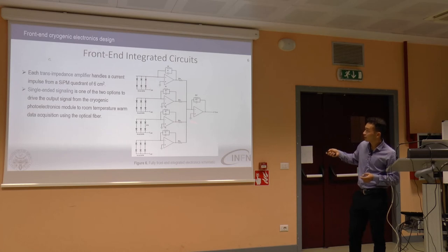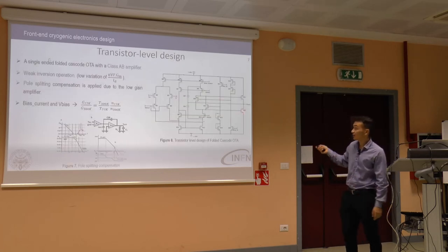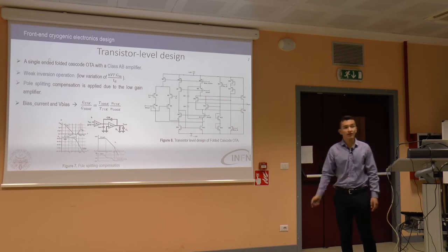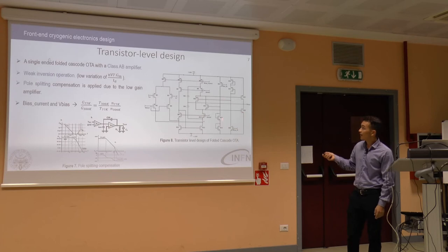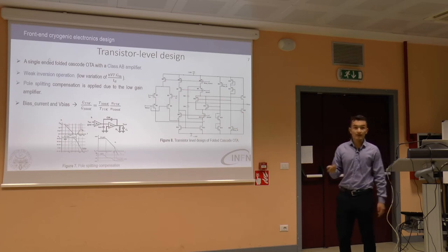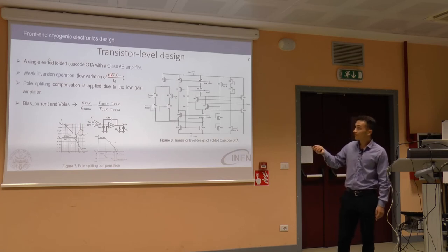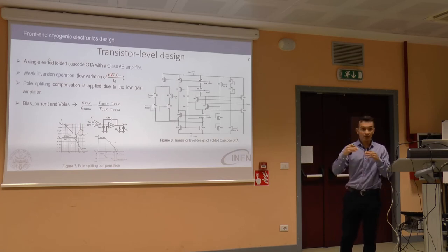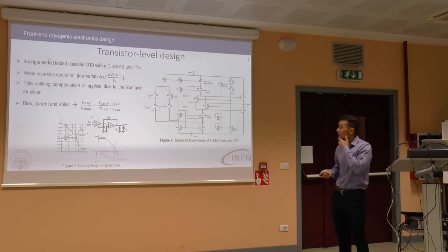Here is the transistor-level design of each block: a folded cascode OTA with a class AB amplifier at the output for symmetrical slew rate, and pole-splitting compensation for strong stability. The transistors operate in weak inversion, presenting low variation between 300 Kelvin and 77 Kelvin of the transconductance parameter, which is beneficial for the circuit design.